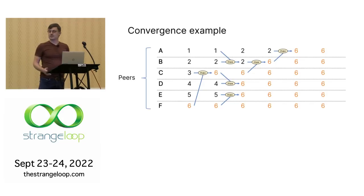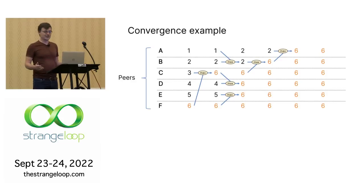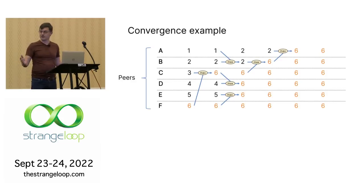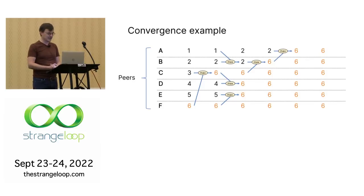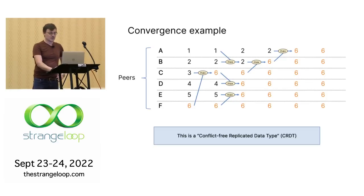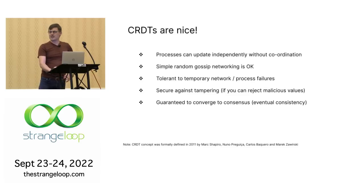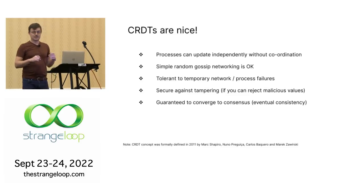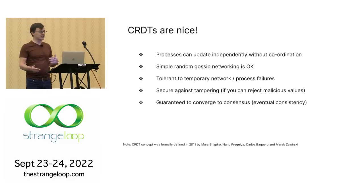We actually converge very quickly — almost like a virus spreading exponentially through the network, filling up the whole network. You get to this single consensus value. This is what we call a conflict-free replicated data type, or CRDT. The processes can basically do their own stuff pretty much independently without coordination. You don't need any messaging, you don't need any locks.